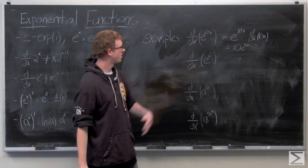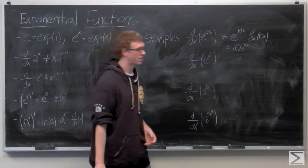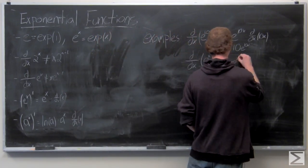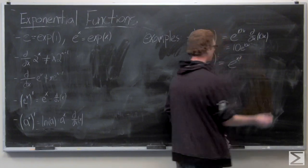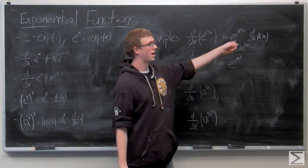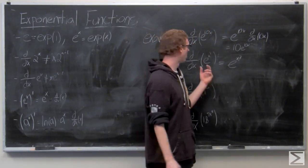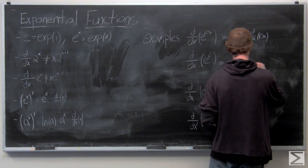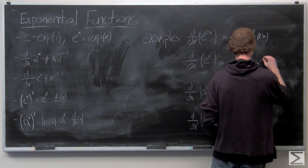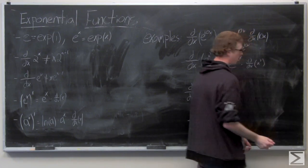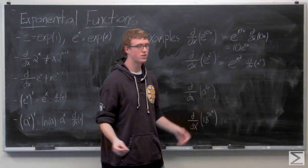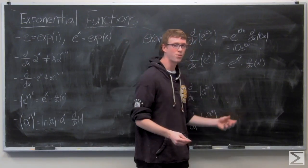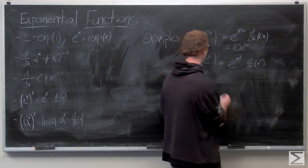We're going to do something similar with e to the x cubed. We have e to the x cubed, and now we need the derivative of x cubed. Using the power rule, that's just 3x squared, so we have 3x squared times e to the x cubed.